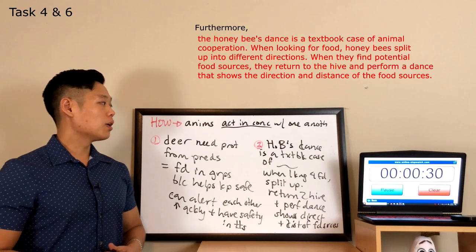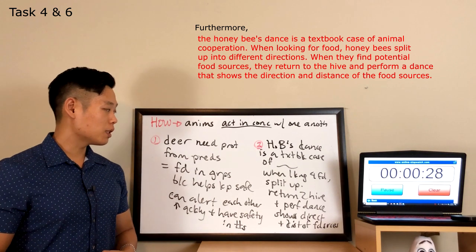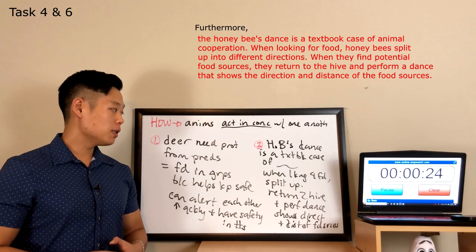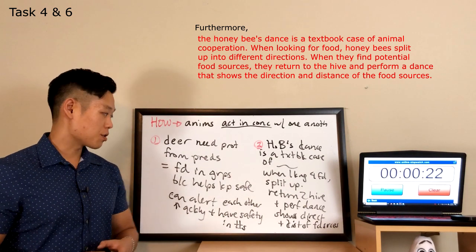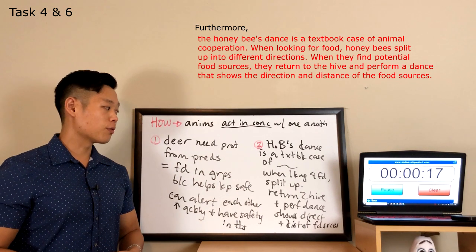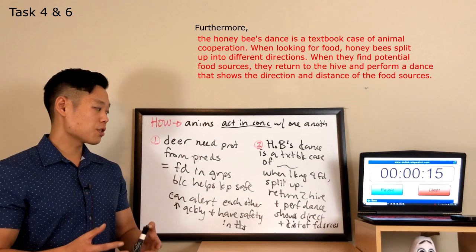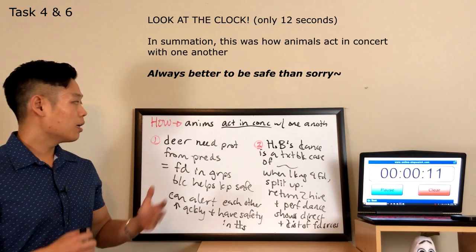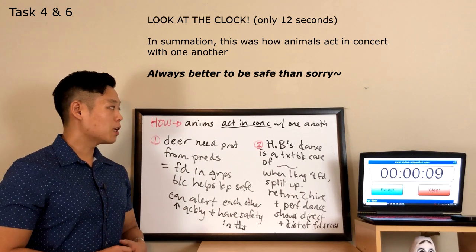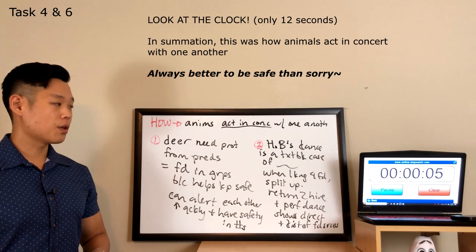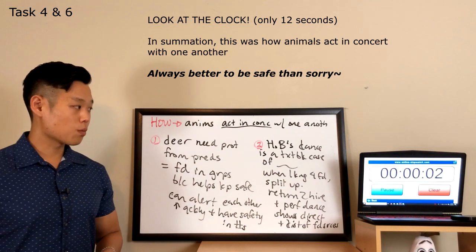Furthermore, the honeybees dance is a textbook case of animal cooperation. When looking for food, honeybees split up into different directions. When they find potential food sources, they return to the hive and perform a dance that shows the direction and distance of the food sources. In summation, this was how animals act in concert with one another, given by the professor in the lecture. Thank you for your time and consideration.